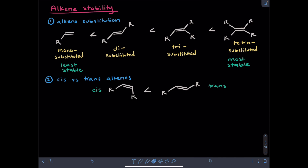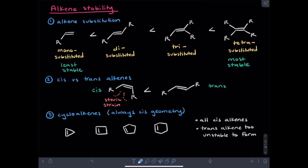We can also see a trend in the stabilities of cis compared to trans alkenes. Cis alkenes, where the non-hydrogen groups are on the same side of the alkene, are less stable than trans alkenes, in which the R-groups are on opposite sides. The cis stereoisomer is less stable because these R-groups are placed close in space to each other — the electron density in the bonds of each R-group repels the other, causing steric strain. Finally, for cyclic alkenes, we will only consider examples in the cis geometry, as trans alkenes in rings are very strained.